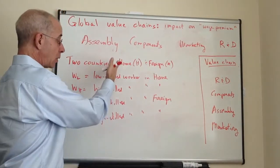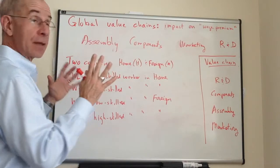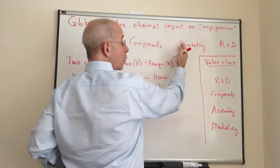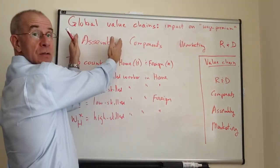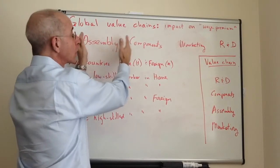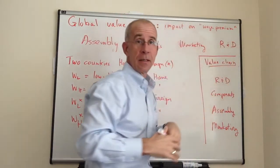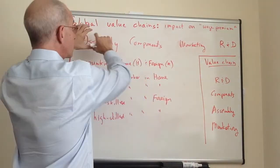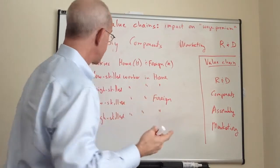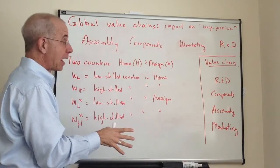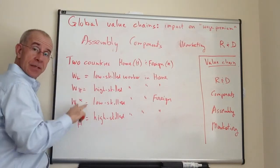We're going to make some basic assumptions about wages of high-skilled and low-skilled workers in the context of different activities requiring increasingly high-skilled workers. Assembly is going to take the relatively low-skilled workers, components a little bit higher-skilled, marketing a bit higher-skilled, and R&D — where we have the engineers and the scientists — requires the high-skilled. So as you go down this direction, you require higher and higher-skilled workers. The two countries we're analyzing have workers that can do all of these activities in principle, but at different wages.